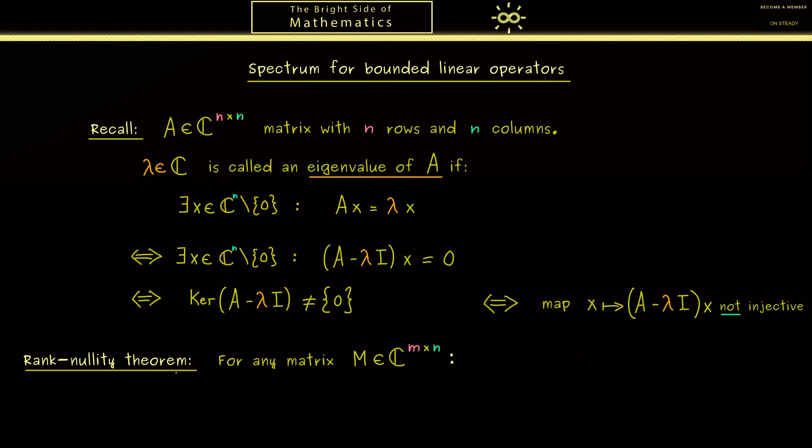This number n is the dimension we have as an input for this map here. And in the following sense this dimension is conserved. The new dimension we get out on the right-hand side is given by the dimension of the range of M. Therefore this number can't be bigger than n, and in the case it is less, everything else has to go into the kernel of M. In other words, both dimensions have to add up to the original dimension we put in.